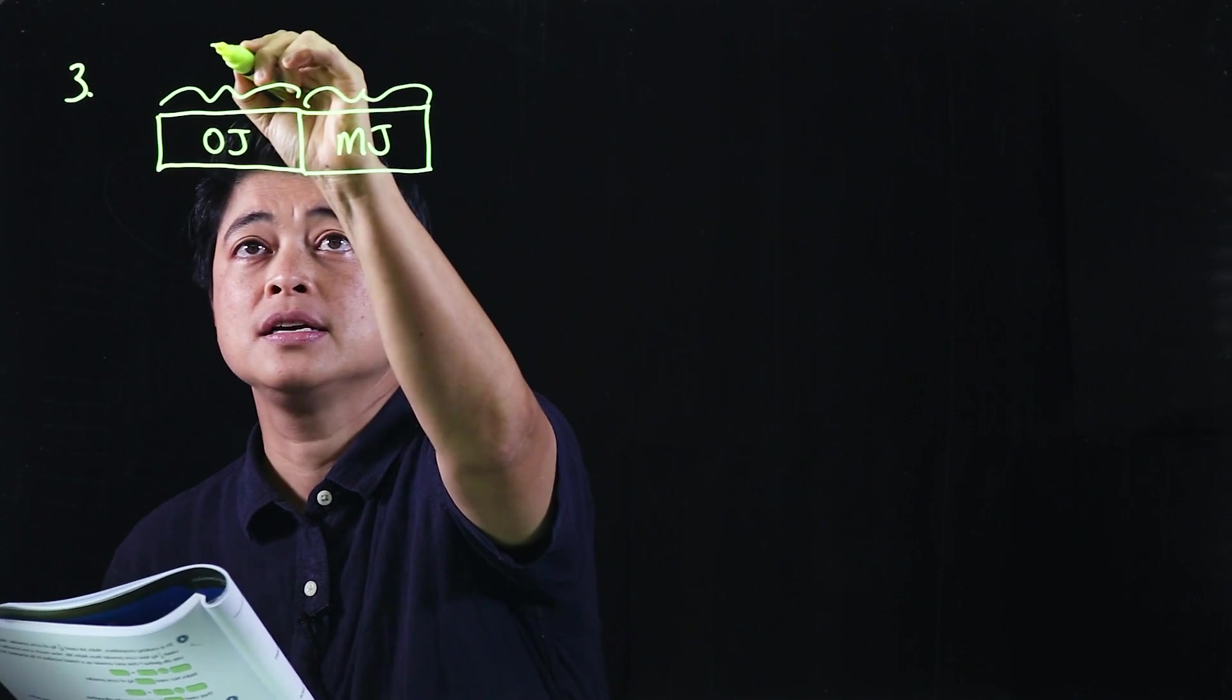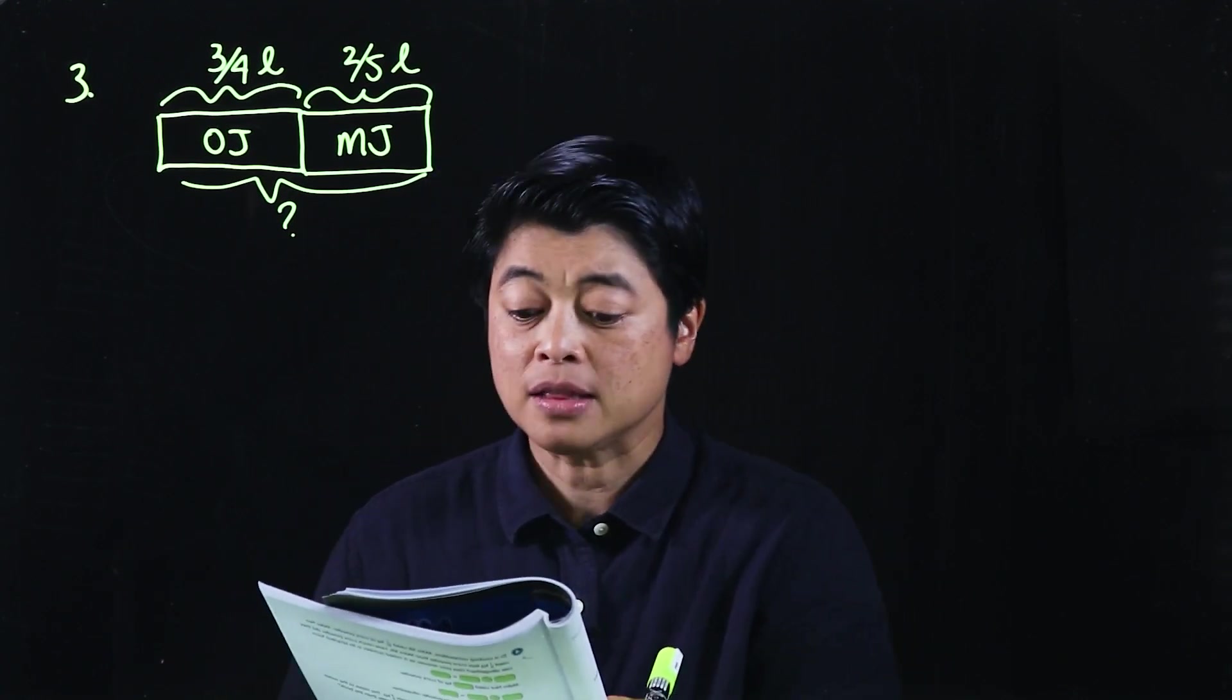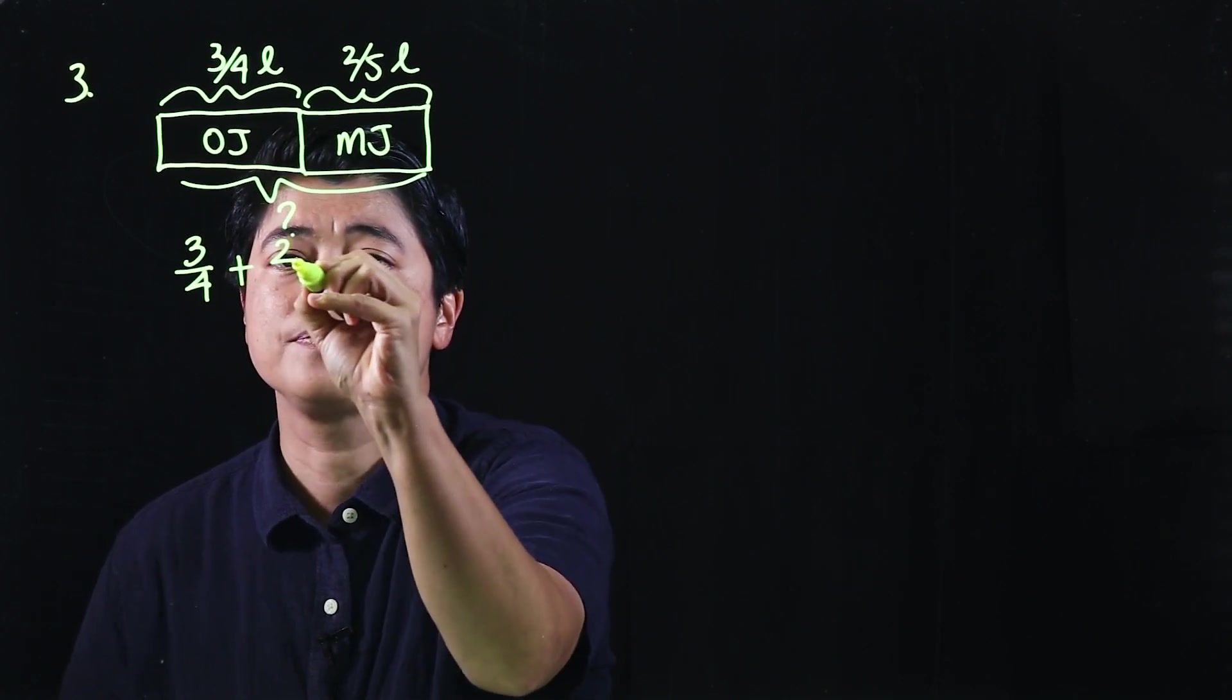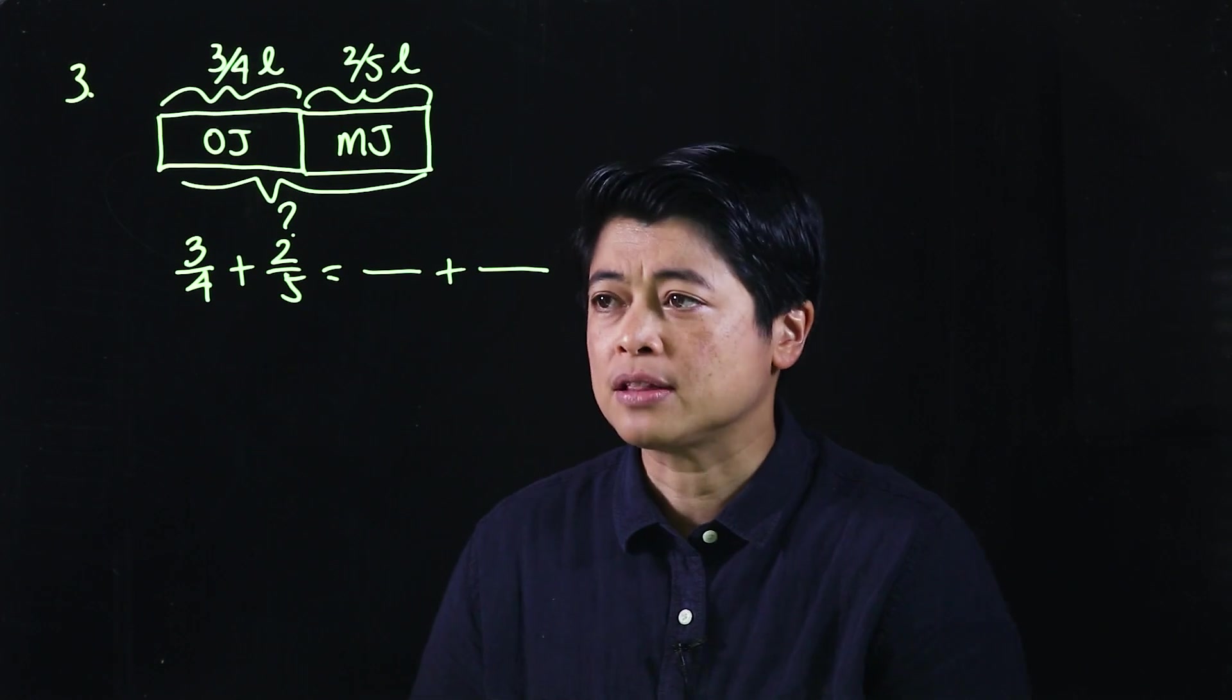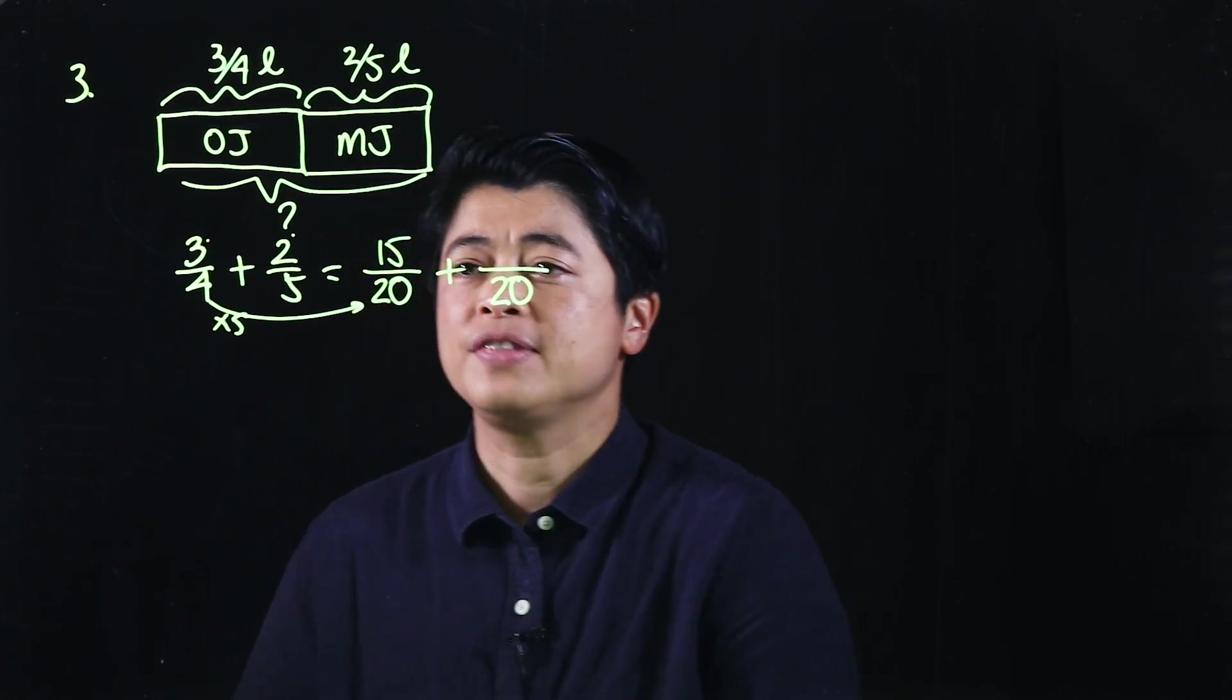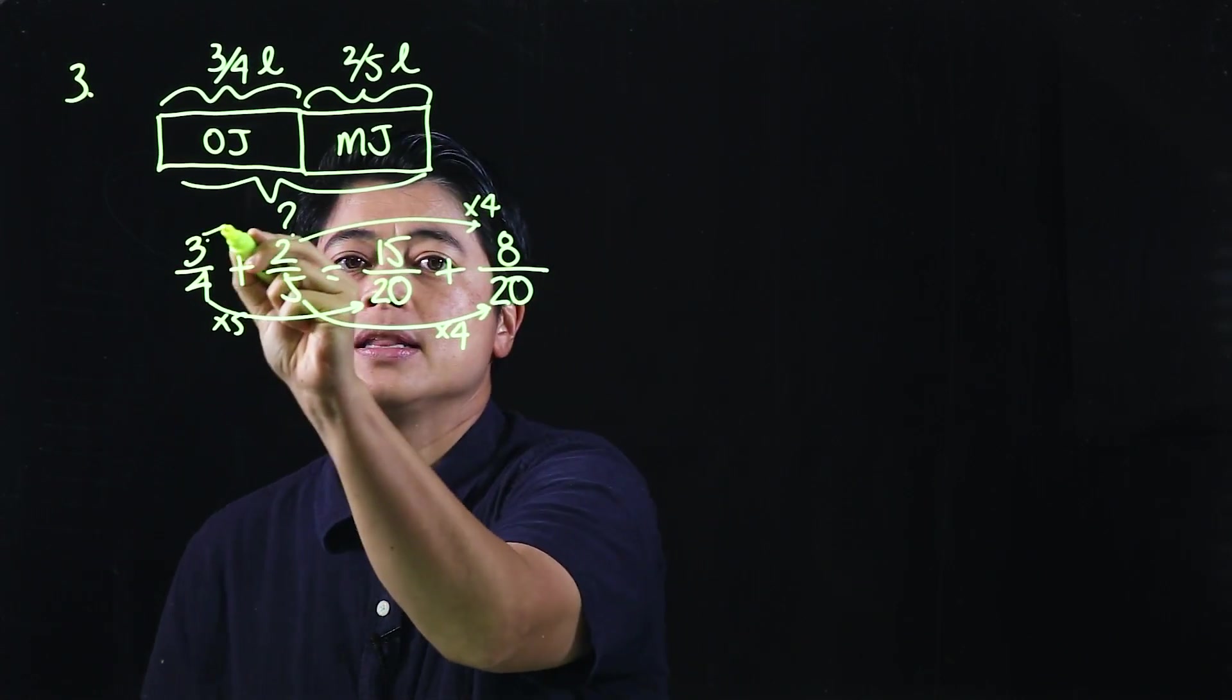This is three-fourths of a liter and this is two-fifths of a liter. The question is what volume of fruit punch did he have, and we're supposed to give us a mixed number in simplest form, which means our operation will be addition. From the last lesson we know that we need to make these the same denominator, so common denominator will be 20. I need to multiply this by five, times that by five, that will be 15. I need to multiply that by four, times that by four, that will be eight.